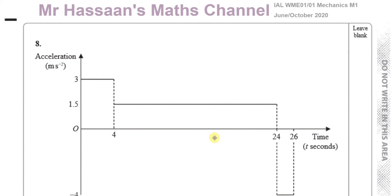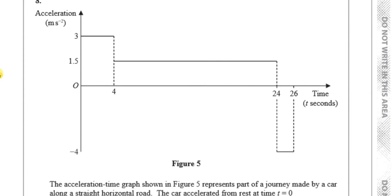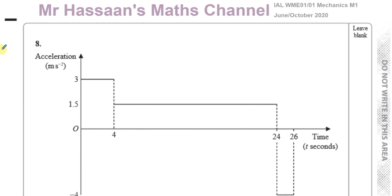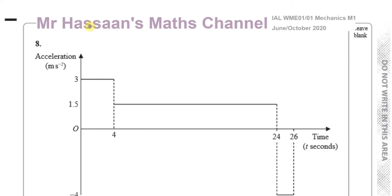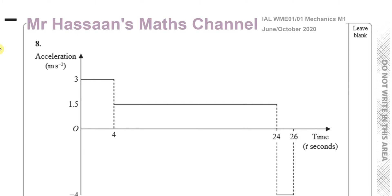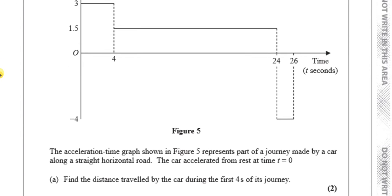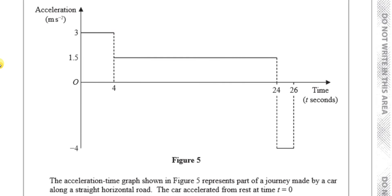Welcome back to Mr. Hassan's Math Channel. This is question number 8 from the M1 June 2020 International A-Level Mechanics paper, and this is the last question on the paper. This question is about an acceleration time graph, which is quite a rare question actually, but it's not that difficult. It says the acceleration time graph shown in figure 5 represents part of a journey made by a car along a straight horizontal road.